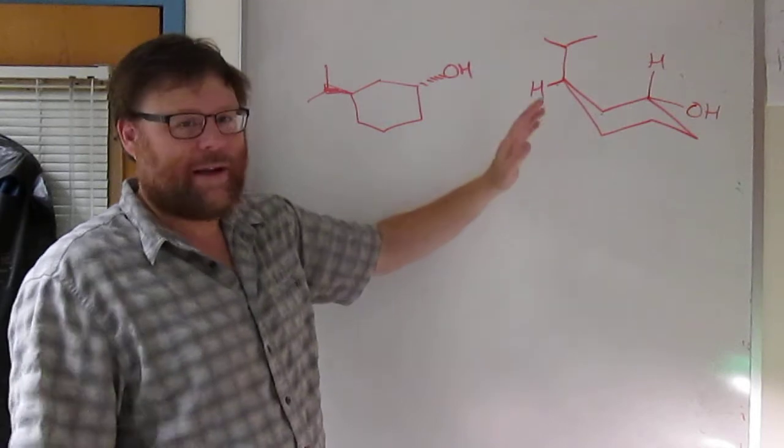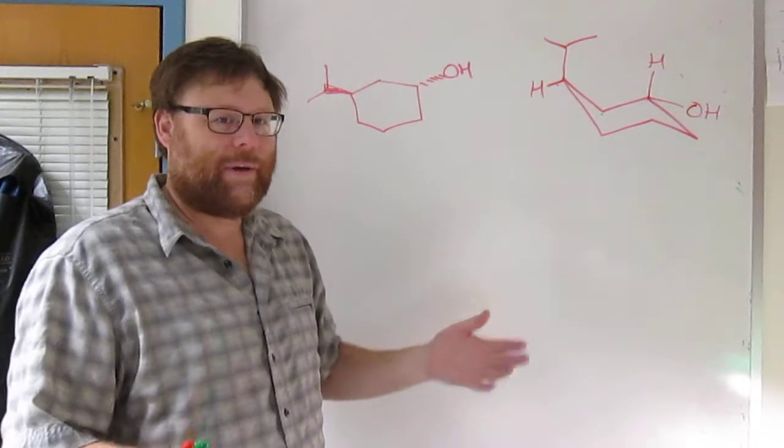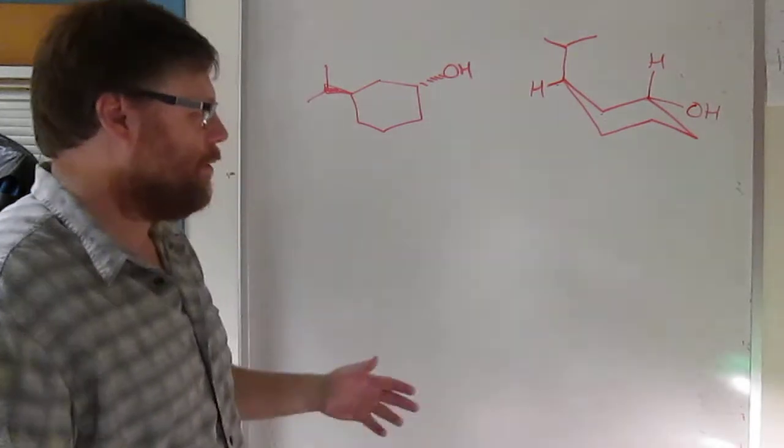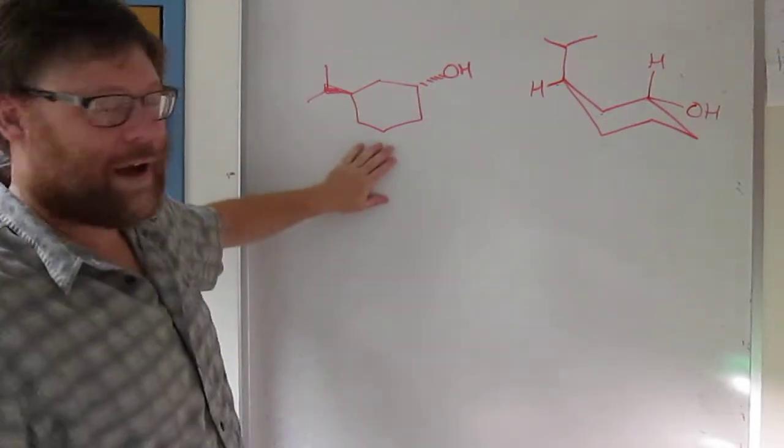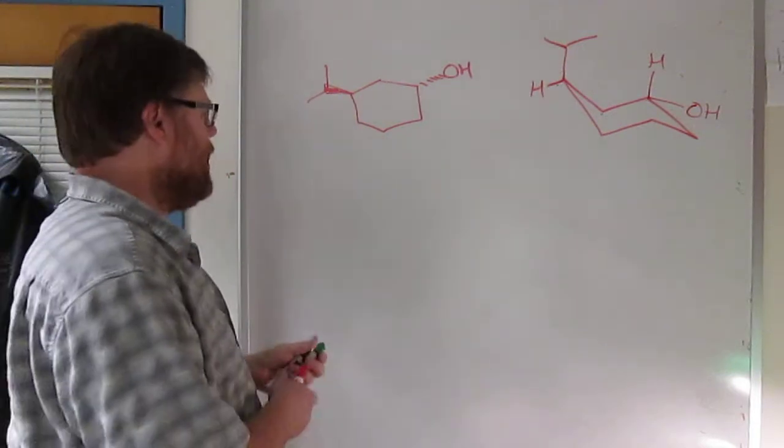Here I thought it might be interesting. So here's the molecule from number three, the cyclohexane from number three that I asked you to draw a chair for. Here's the chair I drew in that video. And I said in the video that you hadn't done absolute configuration yet, R and S. We hadn't talked about enantiomers or chiral carbons or chiral molecules.